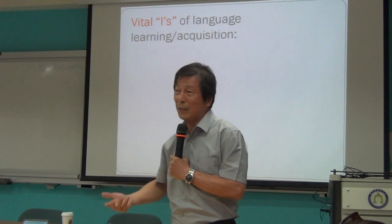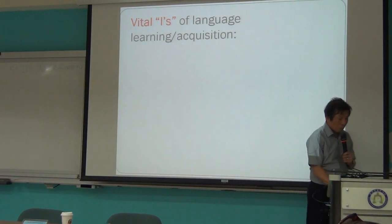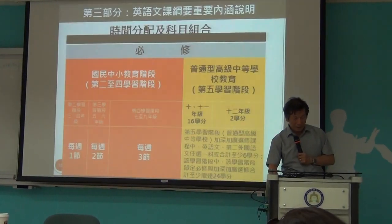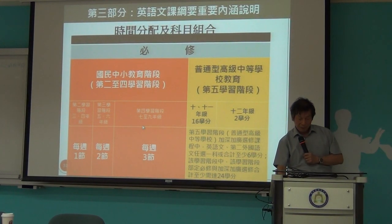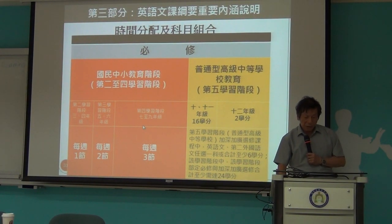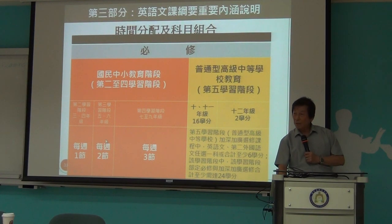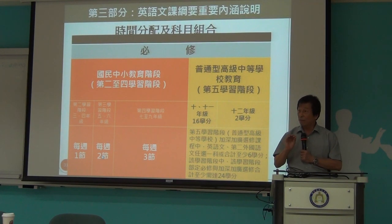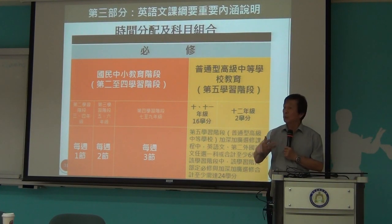Our kids work very hard, but they don't have all of these. When we look at the 12-year education curriculum guidelines, for third and fourth graders that's one meeting every week, and for fifth and sixth graders, two meetings every week. That's very, very little input. How do you expect them to make significant progress?